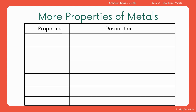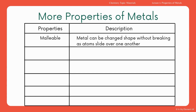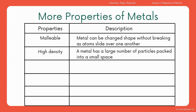There are a few other properties to be aware of. First, metals are malleable — they can be changed in shape without breaking because the atoms slide over one another; that's how metal poles can be bent. Metals also have a really high density, meaning a huge number of particles are packed into a small space, so they feel very heavy for their size.